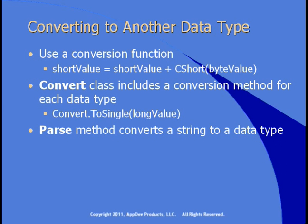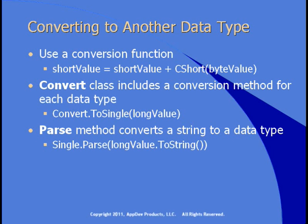The third method is to use the Parse method, which will convert a string to a data type. In this code, we want to take a long value and convert it to a single. First, we take the string representation of the long value, and then we pass that to the Parse method of the Single structure. That says: start with a long, turn it into a string, parse that, and turn it into a single. Typically, you would use Convert.ToSingle in the first place, but if your data is coming in as strings to begin with, then the Parse method is the way to go.